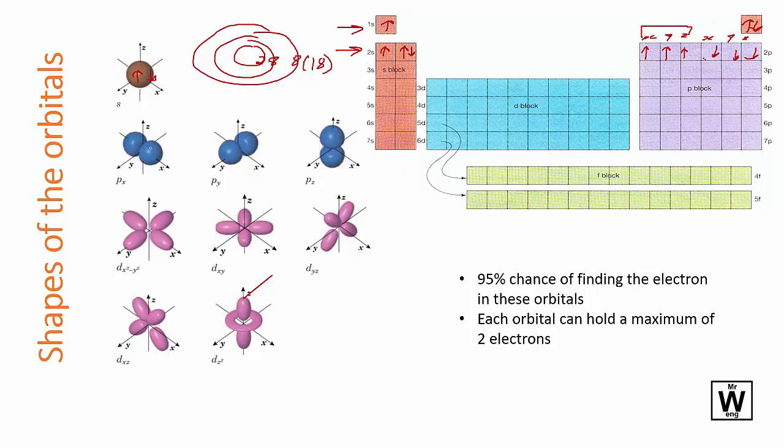This is the x, y, z, p so they're a little bit more dumbbell shaped. You can fit two electrons in these dumbbell shapes and there's five here so you can fit a maximum of two somewhere in these, one of these four positions or there's three sort of areas here.